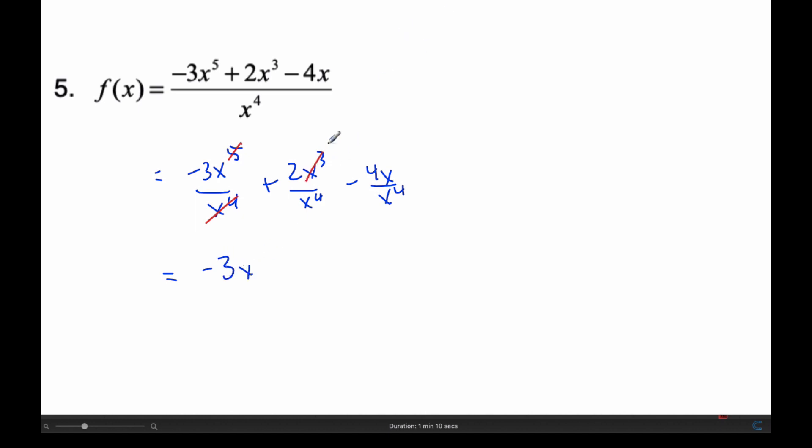When I work on this one, I cancel here and I end up with plus 2 over x. Minus, and when I look at the last term, well that x cancels one of those. And so I'm left with three of them there. And so I get minus 4 over x cubed.